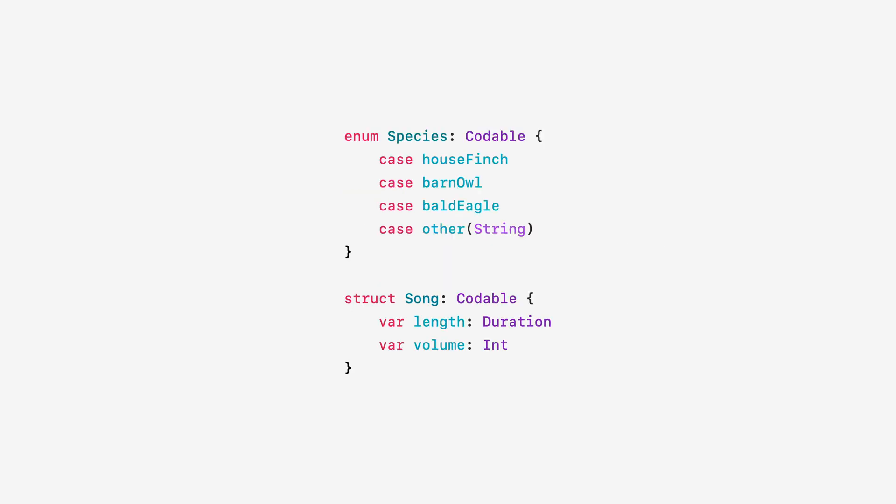SwiftData uses the Codable protocol to understand structs and enums, so you can model your data with the tools that you already know. These types are fully modeled in the underlying datastore, enabling you to perform fast and efficient queries even on complex structured data. And of course, it's simple to integrate SwiftData with SwiftUI.